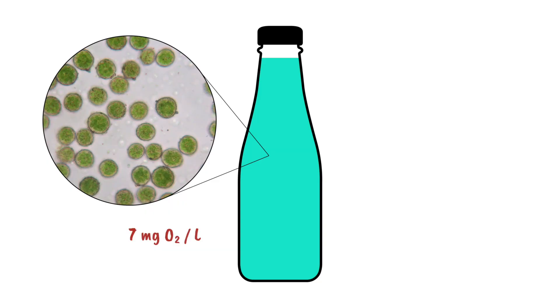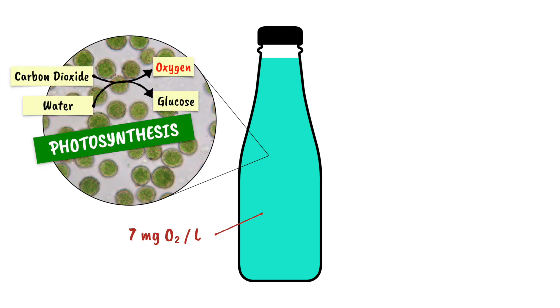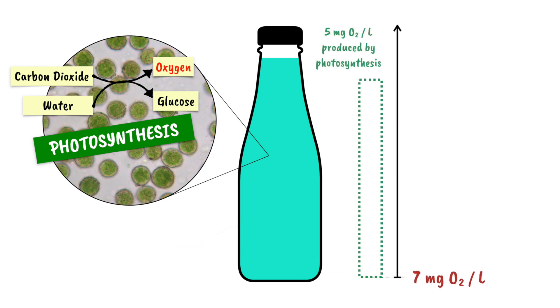Let's say there is 7 mg of oxygen per litre to begin with. After 24 hours, as a result of photosynthesis, the oxygen level rises. Perhaps 5 mg of oxygen is produced, theoretically totalling 12. But if we measured the oxygen level in the bottle, we would not measure 12 mg of oxygen per litre. We may measure a value more like 9 mg per litre.